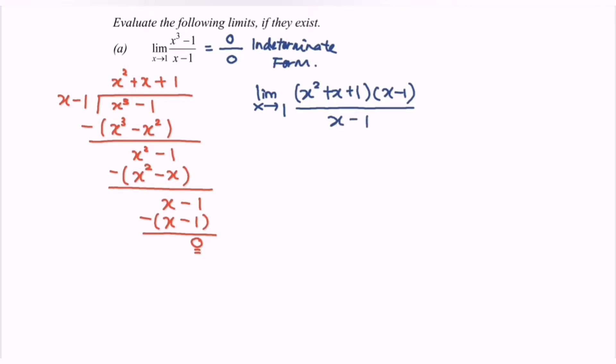Next, we are going to simplify. As we can see, we have a common term which is x minus 1 for both the numerator and the denominator. After we simplify, we will have the limit when x approaches 1 of x square plus x plus 1.